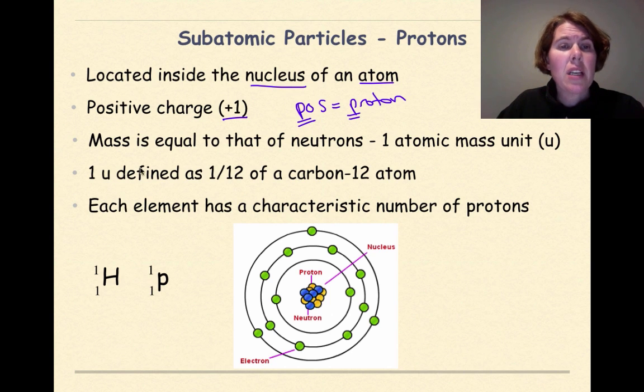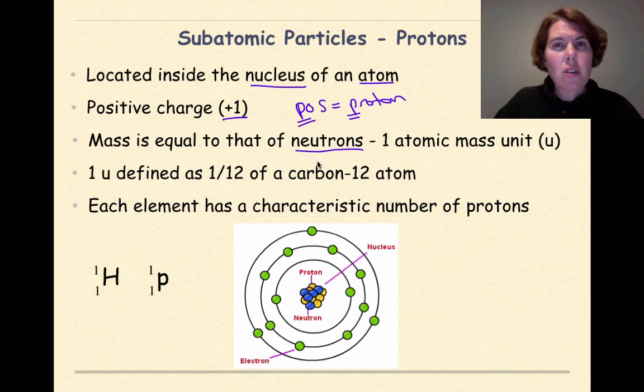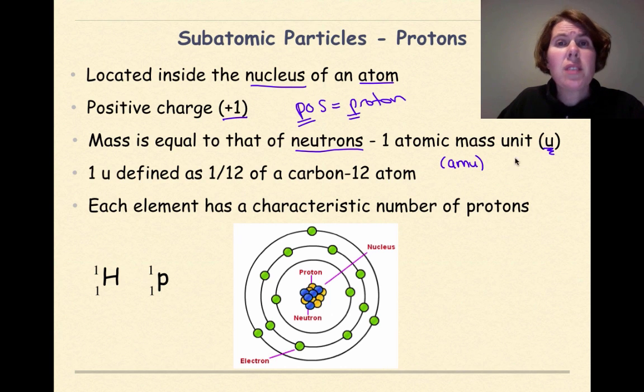And the mass of a proton is equal to that of a neutron which we'll be discussing in a moment. So protons and neutrons have very similar masses. We say that they are both equal to approximately one atomic mass unit which in Regents chemistry we're going to represent as a little u. If you use a textbook they also might represent an atomic mass unit as an AMU which is absolutely fine. But for New York State and the Regents exam we're going to be representing it as a U.